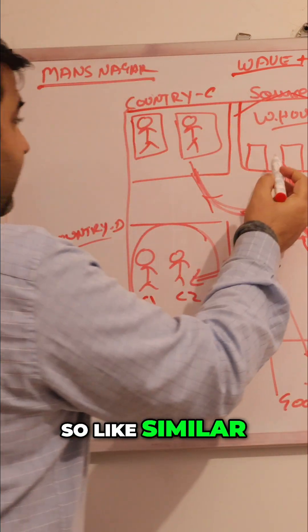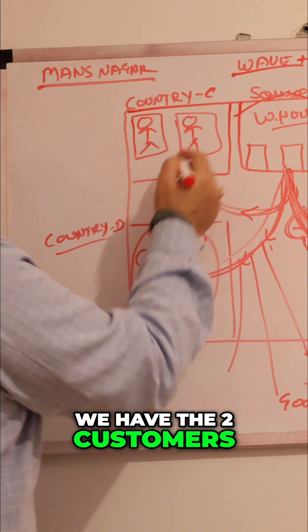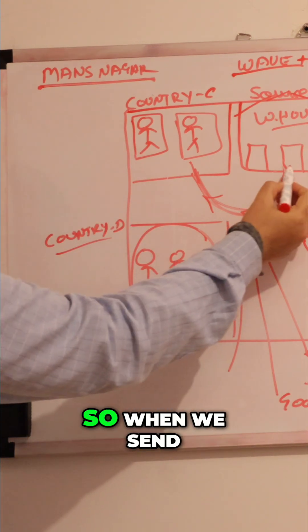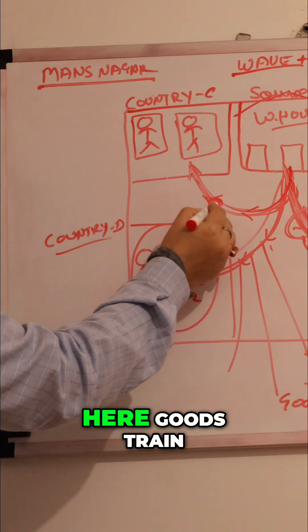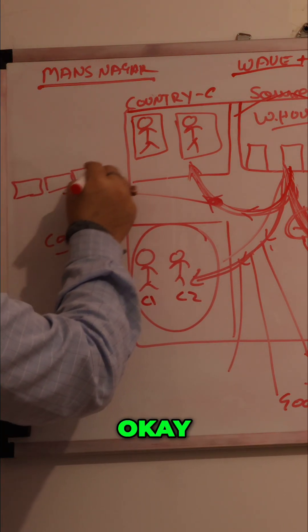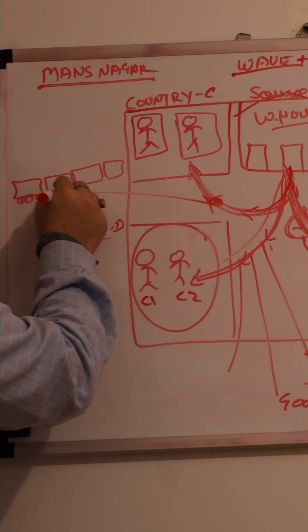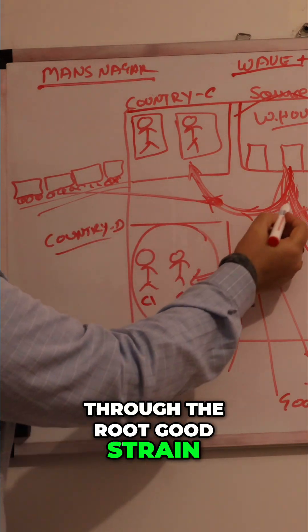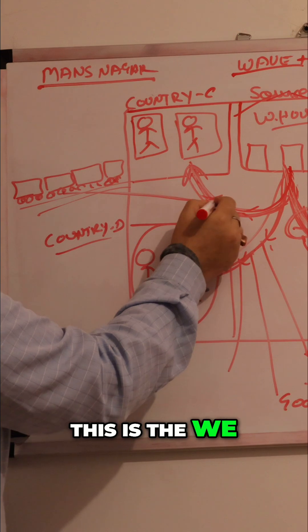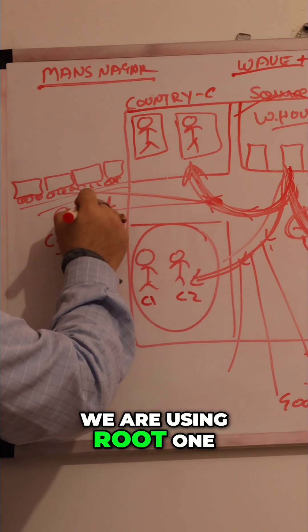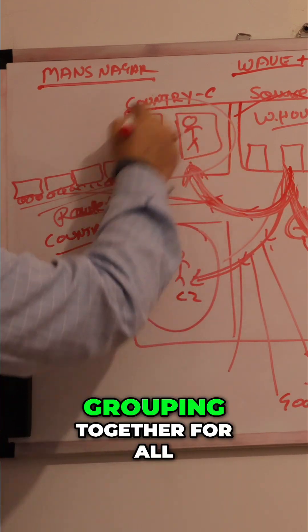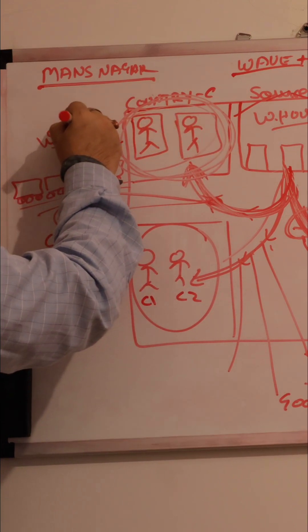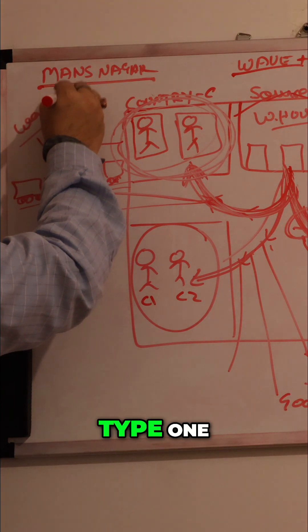Similar to this, our source warehouse has two customers, for example, in different cities and different states. When we send the deliveries to them, suppose we are using a goods train. So sending through the routes via goods train, this is Route 1. Grouping together all outbound deliveries inside one country, we call this Wave 1 or Wave Type 1.